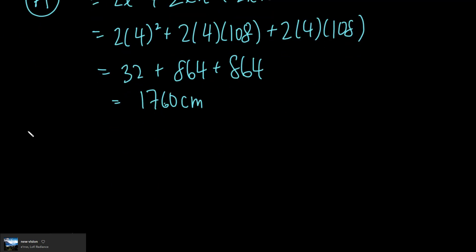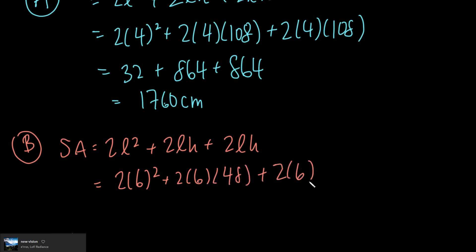Let's look at option B now. We have surface area equals 2L² + 2LH + 2LH. In this case, our height here is 48 and our length here is 6. So we're going to do 2 times 6² plus 2 times 6 times 48 plus 2 times 6 times 48.